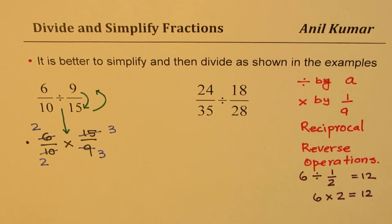Now what do you notice? You notice that we have 2 divided by 2—they can be cancelled, correct? 2 divided by 2 is 1 and 3 divided by 3 is also 1.